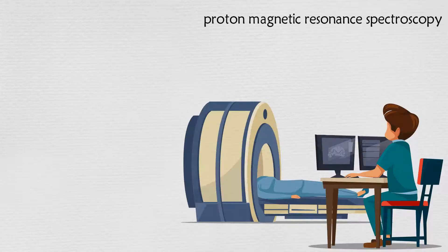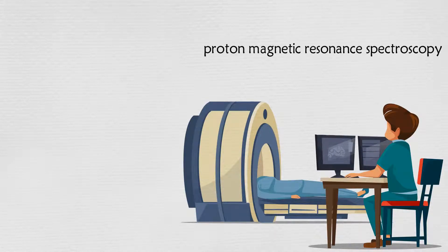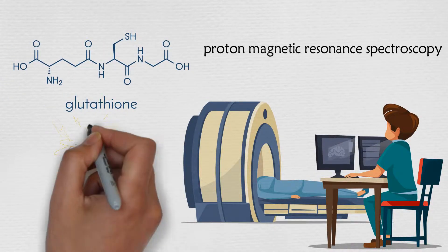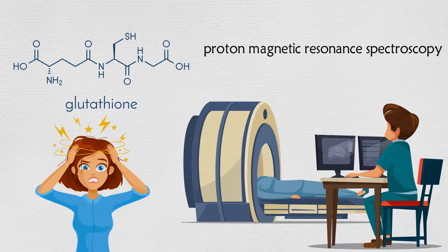The following study used proton magnetic resonance spectroscopy to measure glutathione levels in both healthy individuals and patients with Alzheimer's disease.